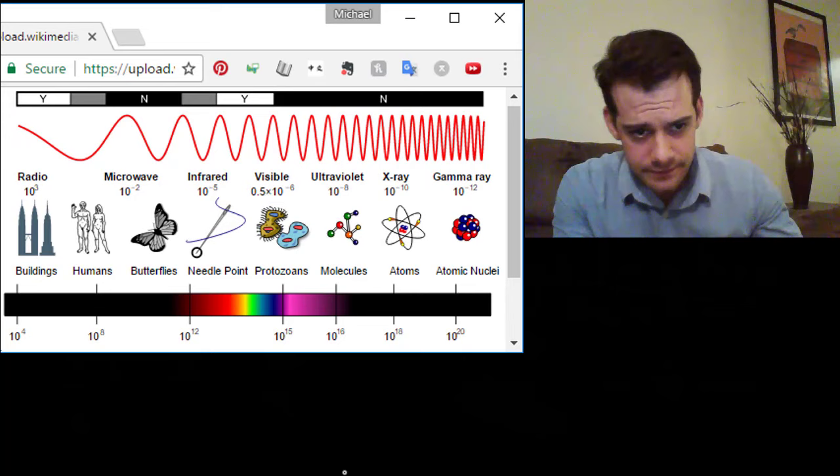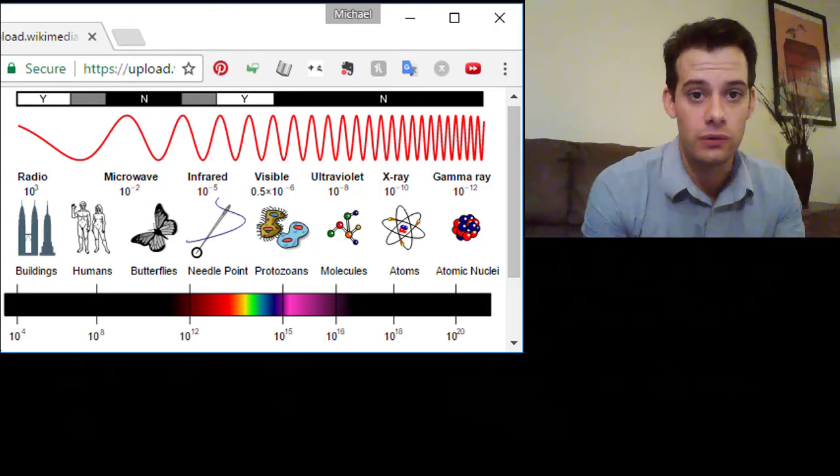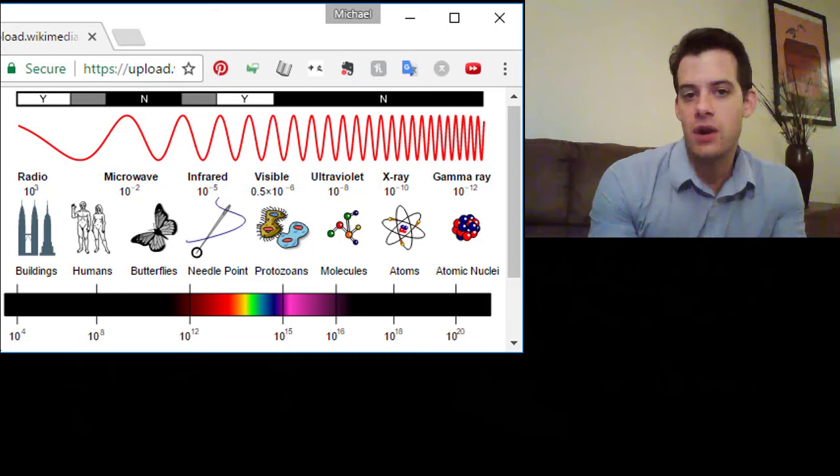This just shows the spectrum of light waves and we can see there's very large waves like radio waves which are the size of large buildings. We don't see these when they're all around us but we can't see them.